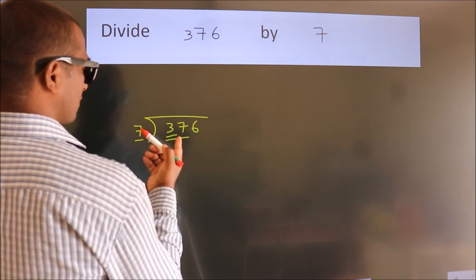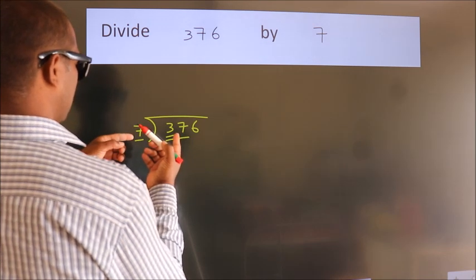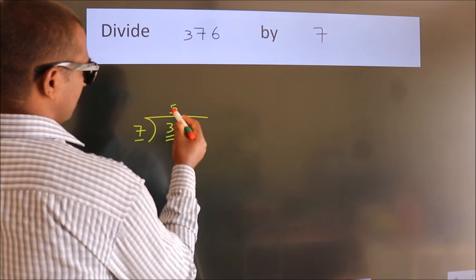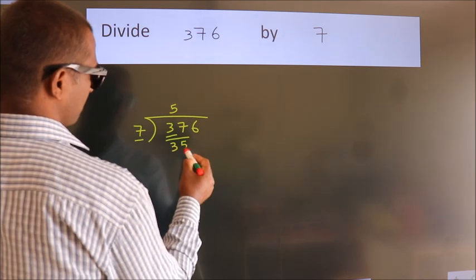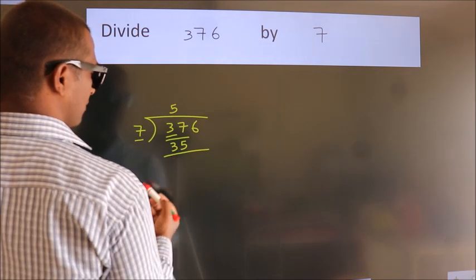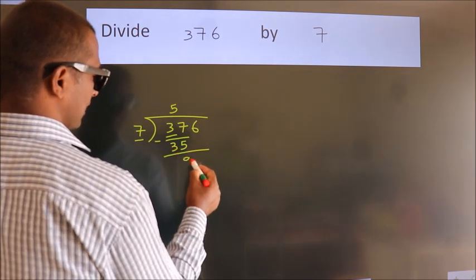A number close to 37 in the 7 table is 7 fives, 35. Now we should subtract. We get 2.